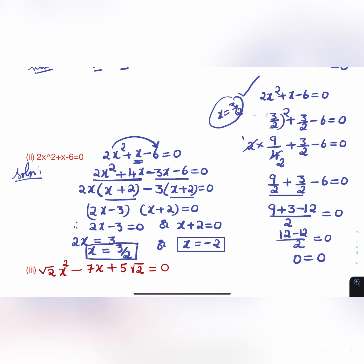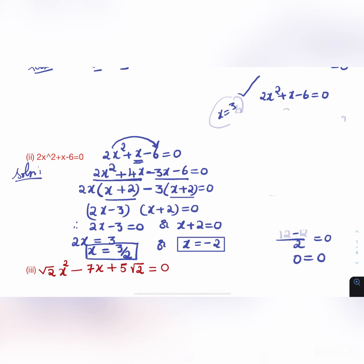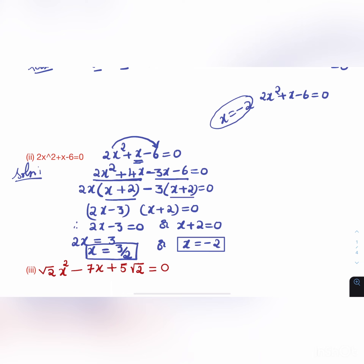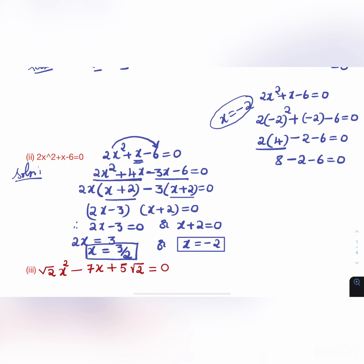For x = -2: 2(-2)² + (-2) - 6 = 2(4) - 2 - 6 = 8 - 8 = 0. So 0 = 0 and our answer is correct. These are the two roots: x = 3/2 and x = -2.